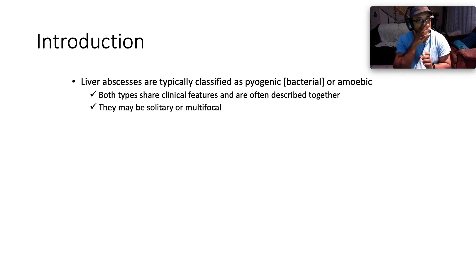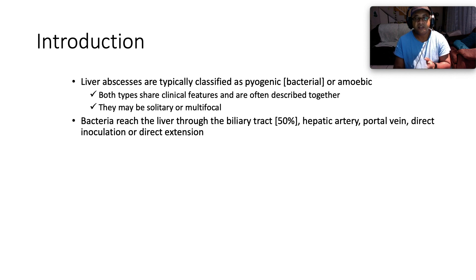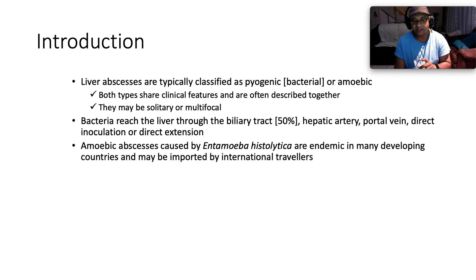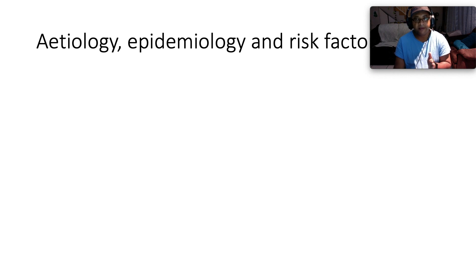Liver abscesses are typically classified as pyogenic, which speaks to bacterial etiology, or amoebic, due to Entamoeba histolytica, which is a protozoan. Both share clinical features and are often described together. They may be solitary or multifocal. Bacteria reach the liver through the portal tract in 50% of cases, or via the hepatic artery, portal vein, direct inoculation, or direct extension from contiguous organs. Amoebic abscesses are endemic in many developing countries and may be imported via travelers. Fungal and CMV abscesses may occur in immunocompromised patients and have a very different presentation.